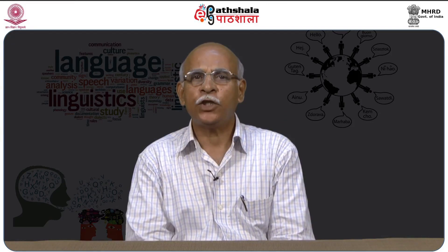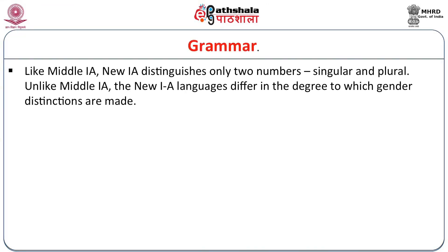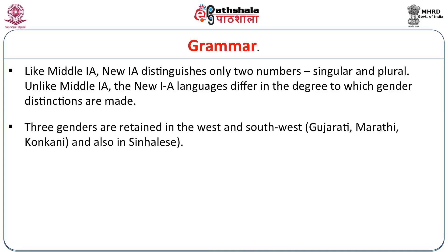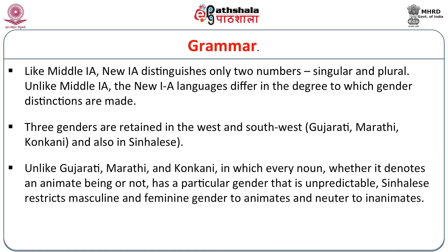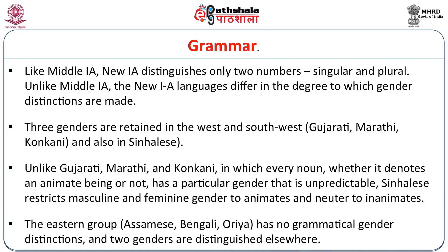Like Middle Indo-Aryan, New Indo-Aryan distinguishes only two numbers — singular and plural. Unlike Middle Indo-Aryan, the New Indo-Aryan languages differ in the degree to which gender distinctions are made. Three genders are retained in the west and southwest — that is Gujarati, Marathi, Konkani — and also in Sinhalese. Unlike Gujarati, Konkani, and Marathi, in which every noun has a particular gender that is unpredictable, Sinhalese restricts masculine and feminine gender to animates and neuter to inanimates. The Eastern group has no grammatical gender distinctions at all, and two genders are distinguished elsewhere.